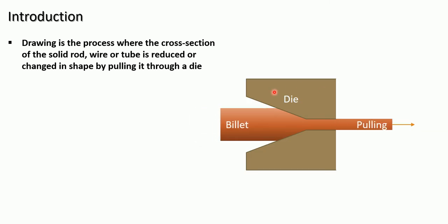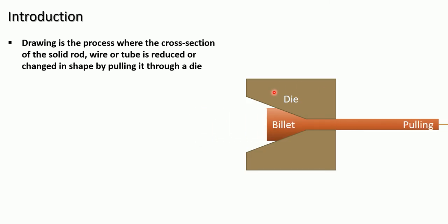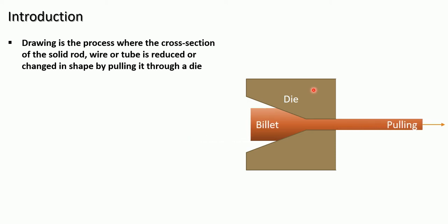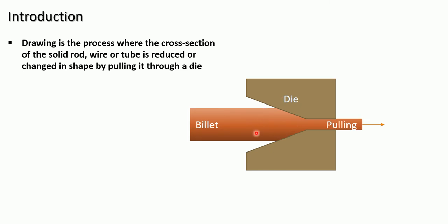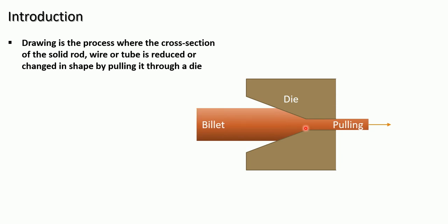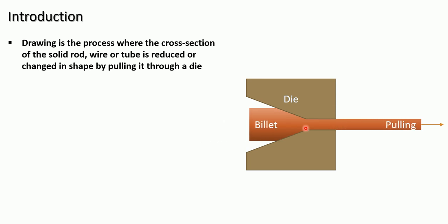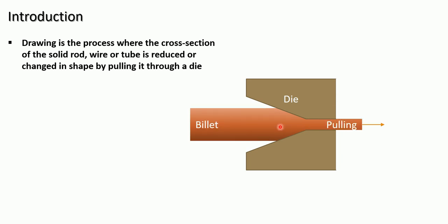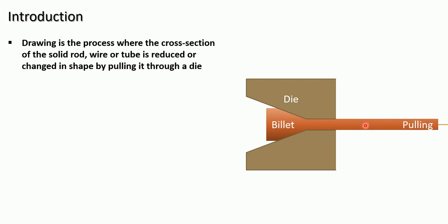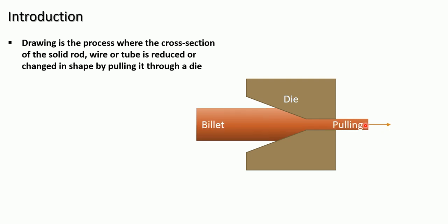Now, this is the animation of the drawing process. This is the die and through that die, the material is pulled. While pulling that material through this die, the billet or raw material is acquiring the cross sectional shape of that die. This is the product which is pulled through the die.